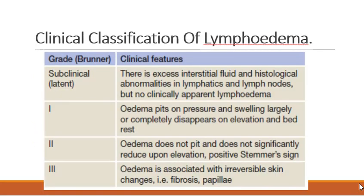Clinical classification of lymphedema is based on different presentations and signs and symptoms using Brunner grading: subclinical or latent type, grade 1, grade 2, and grade 3. In the subclinical or latent grade, there is excess interstitial fluid and histological abnormalities in lymphatics and lymph nodes, but no clinically apparent lymphedema — just increased interstitial fluid.